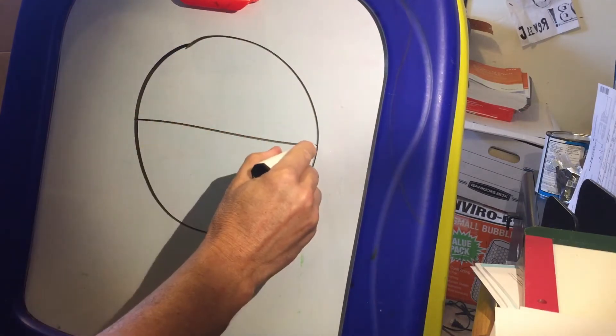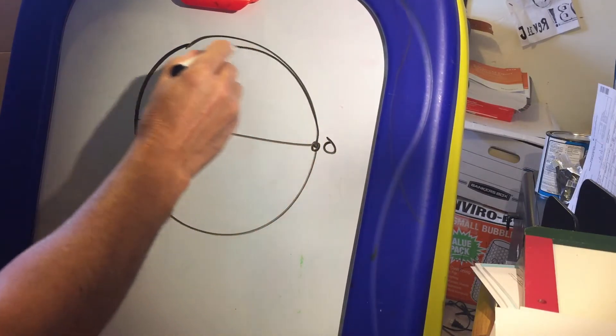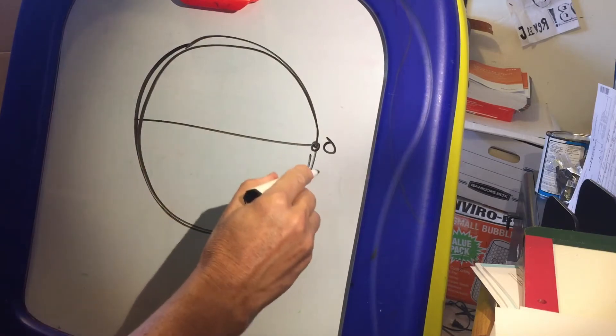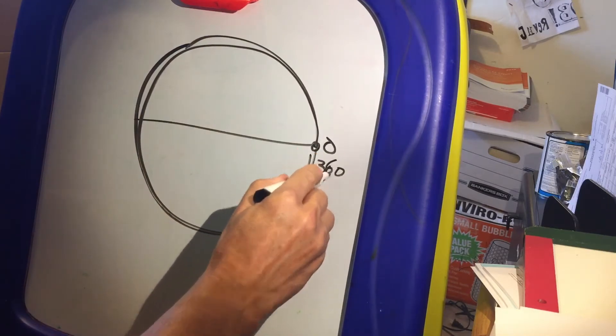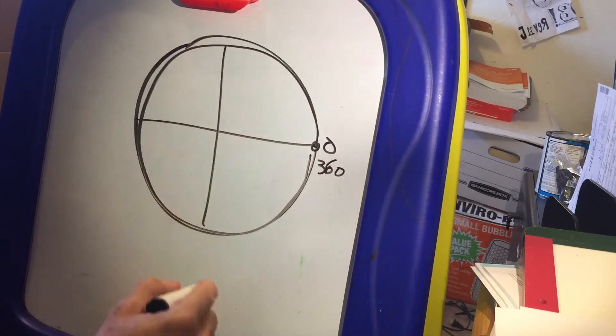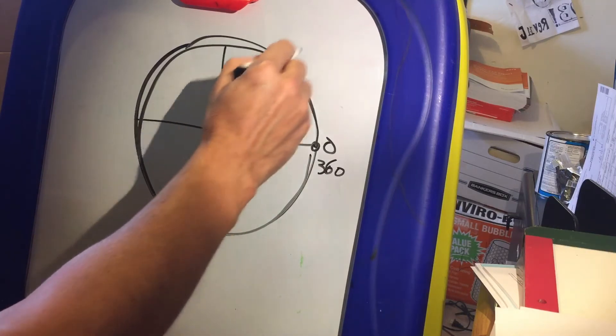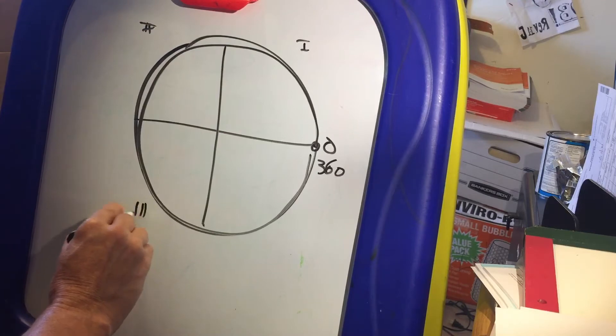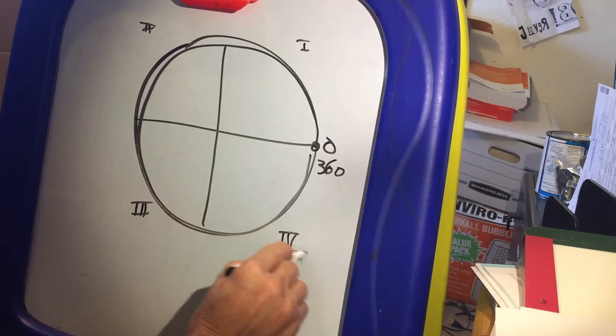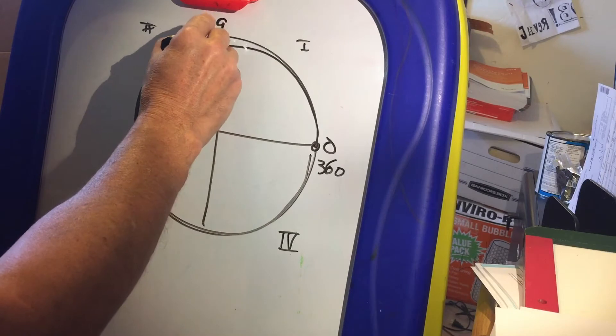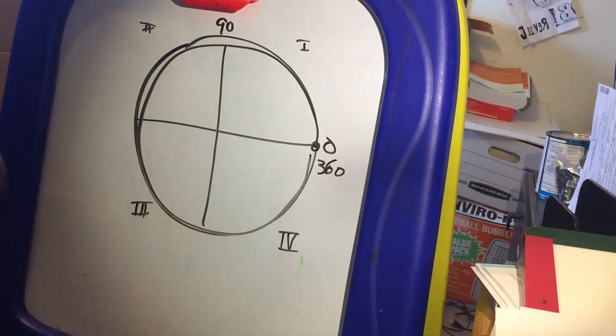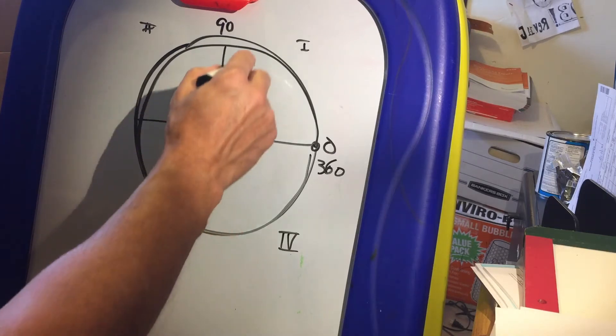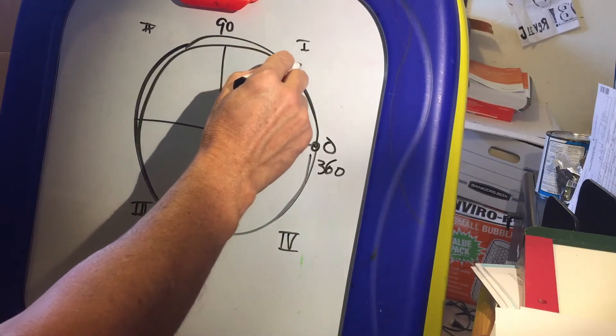Starting right here at zero, it goes all the way around the circle and you end up at 360 degrees. The circle is divided into four quadrants: the first, the second, the third, and the fourth quadrant. In this quadrant right here, from 0 to 90 degrees, we have really three major divisions that we're concerned with with degrees and radians.